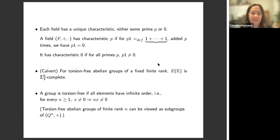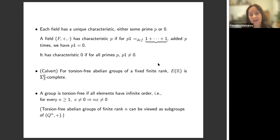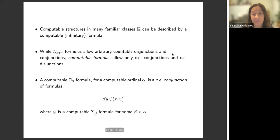Calvert also showed a slightly different result at the same third level of the arithmetical hierarchy: for torsion-free abelian groups of a fixed finite rank, E(K) is Σ⁰₃-complete. A group is torsion-free if all elements have infinite order — for every n, if x is a non-zero element then nx ≠ 0. We can think of torsion-free abelian groups of finite rank n as subgroups of Q^n with respect to plus, and there's an easier way to search for an isomorphism than going through actual isomorphic functions.